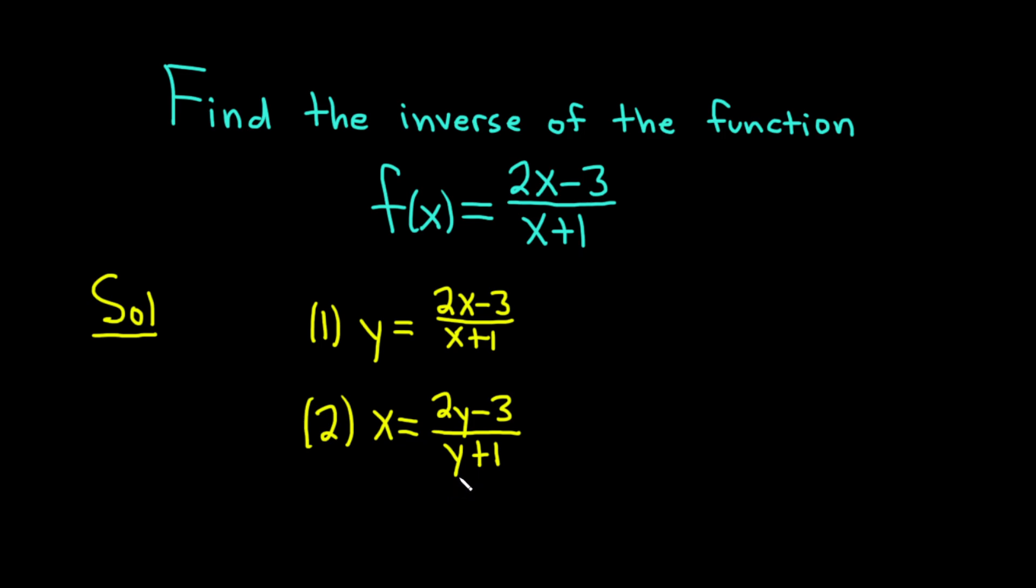Third step is where the problem can get difficult or it can be easy. We actually have to solve this equation for y. So I'm going to write it up here. And I'm going to go ahead and write the equation again. So we have x equals 2y minus 3 over y plus 1. And we have to solve this for y.